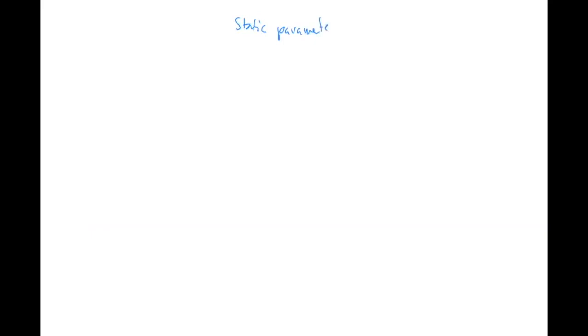We're going to continue with static and dynamic parameters of spirometry. The static parameters - you know them from physiology - are total lung capacity, vital capacity, and residual volume. These are the main ones, and we can display them in different ways.